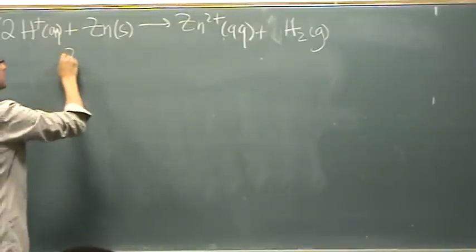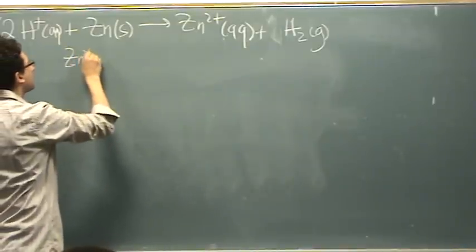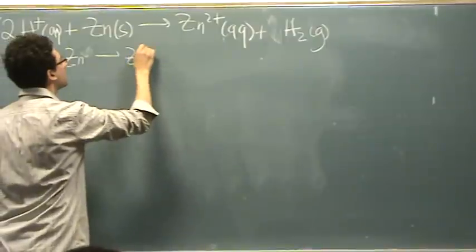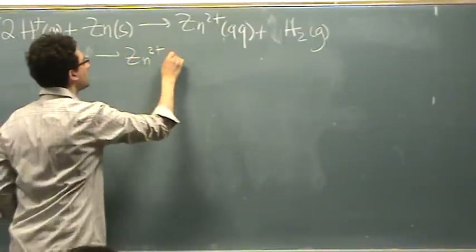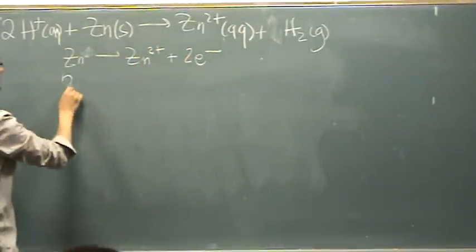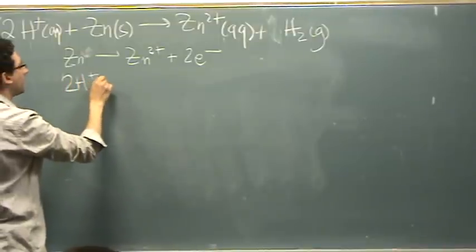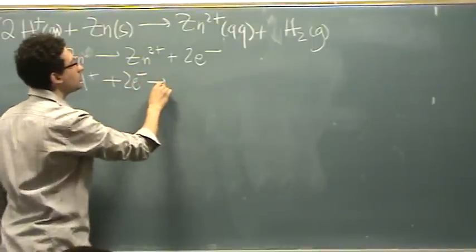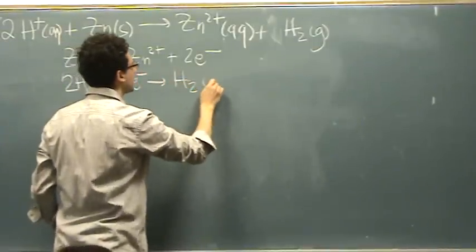So we have our half reactions. The zinc solid goes to zinc 2 plus plus 2 electrons, and we have the 2 H plus aqueous plus 2 electrons goes to H2 gas.